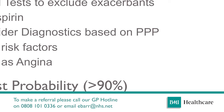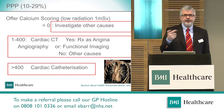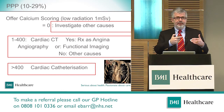The Diamond-Forrester pre-test probability guides management. For people over 10% pre-test probability, before thinking about diagnostics you need to work them up — consider aspirin if there's any suggestion of coronary disease, address risk factors first and foremost, and if they certainly have symptoms you might consider treating them before referring for diagnostics. For pre-test probability above 90%, you don't need any tests — treat them for risk factors and all.